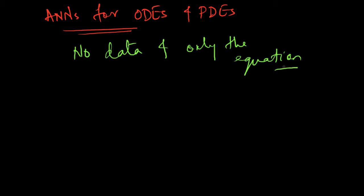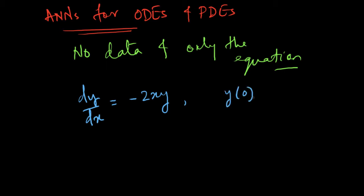This is a very different approach to the use of ANNs compared to regular supervised learning. The same method we are going to describe can also be used for solving PDEs, but we are going to focus on ODEs for simplicity. So let's take an ODE: dy/dx = -2xy, and since this is a first-order ODE we also need the initial condition, so let's say y at x = 0 is equal to 1.